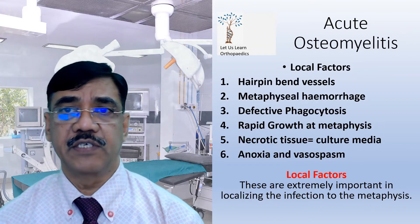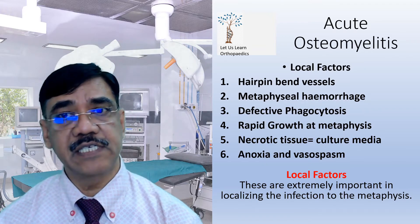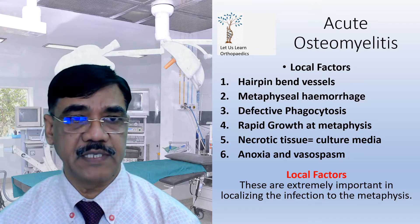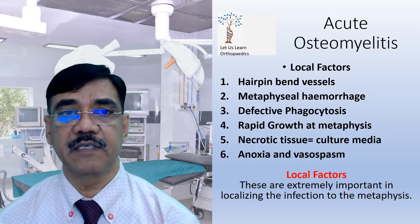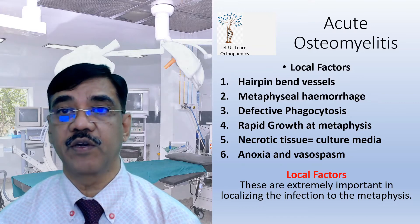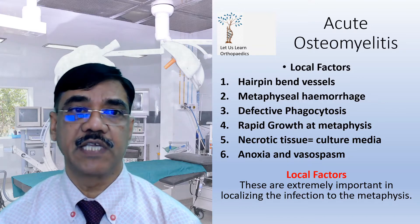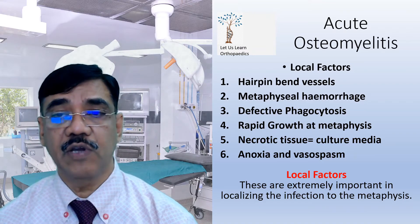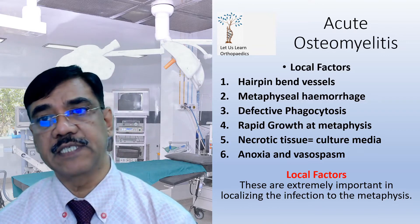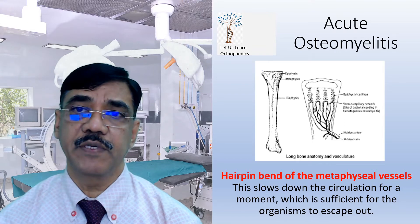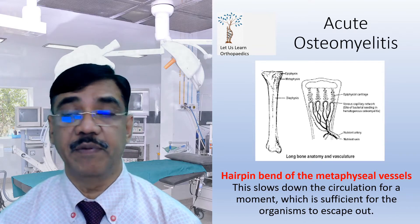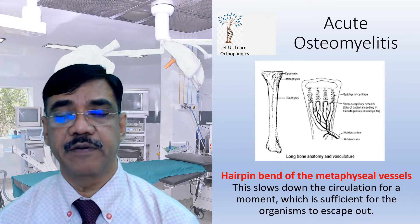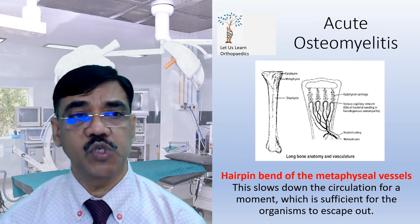The local factors include the hairpin bend vasculature in the metaphysis, metaphyseal hemorrhages, defective phagocytosis in the metaphysis, rapid growth at the metaphysis, necrotic tissue becoming a good culture medium, and anoxia and vasospasm. These local factors are extremely important in localizing the infection to the metaphysis. Looking at the picture of the metaphysis, you can see the hairpin bend of the metaphyseal vessels, which slows down circulation momentarily — sufficient for organisms to escape out.